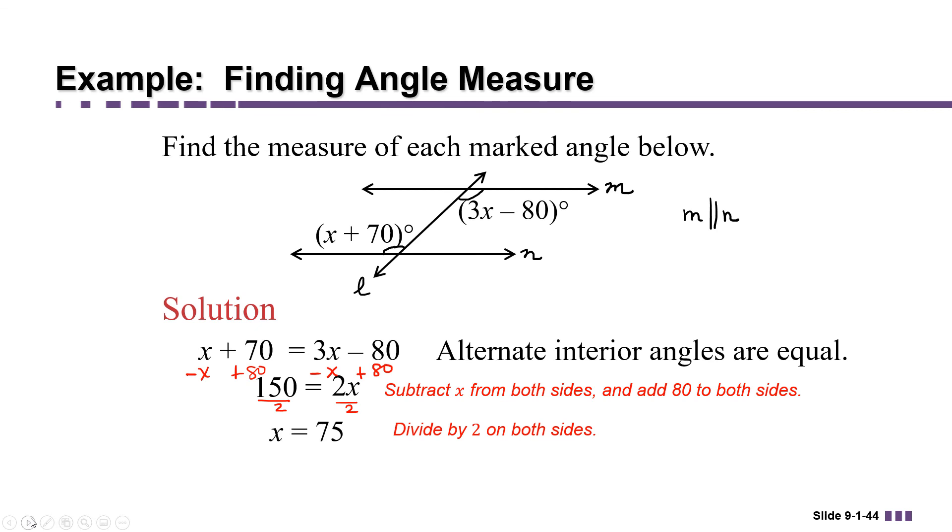Unfortunately, we weren't asked to find x, we were asked to find the marked angle. So we have to plug that value back into the expressions we were given. So if you plug 75 into x plus 70, you're going to get 145. But you're also going to get 145 if you plug 75 into 3x minus 80. And that makes sense because alternate interior angles are supposed to be equal.